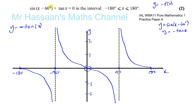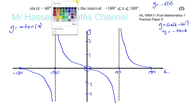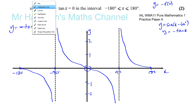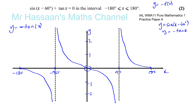Now I'm going to do sine(x minus 60). I'll draw this in a different color. The graph of y equals sine x will normally go through (0, 0), reach 1 at 90 degrees, and reach 0 at 180. It goes to minus 1 at minus 90 and back to 0 at minus 180. We need to know our sine and cosine curves. That's how it would look if it was just y equals sine x.